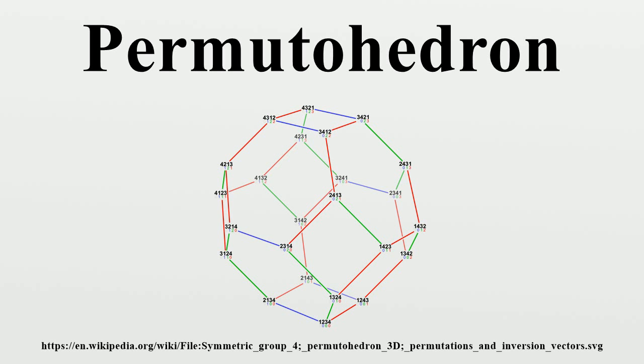Other properties. The permutohedron is vertex transitive. The symmetric group S_n acts on the permutohedron by permutation of coordinates. The permutohedron is a zonotope. A translated copy of the permutohedron can be generated as the Minkowski sum of the n choose 2 line segments that connect pairs of the standard basis vectors.